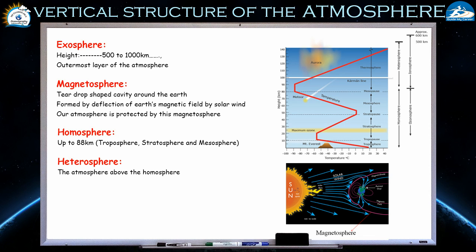The exosphere extends from 500 kilometers to thousands of kilometers and is the outermost layer of the atmosphere. Within it you can also see the magnetosphere. The magnetosphere is very important — in the image shown in this slide, you can see it being deflected by the solar wind into a teardrop-shaped cavity around the Earth.